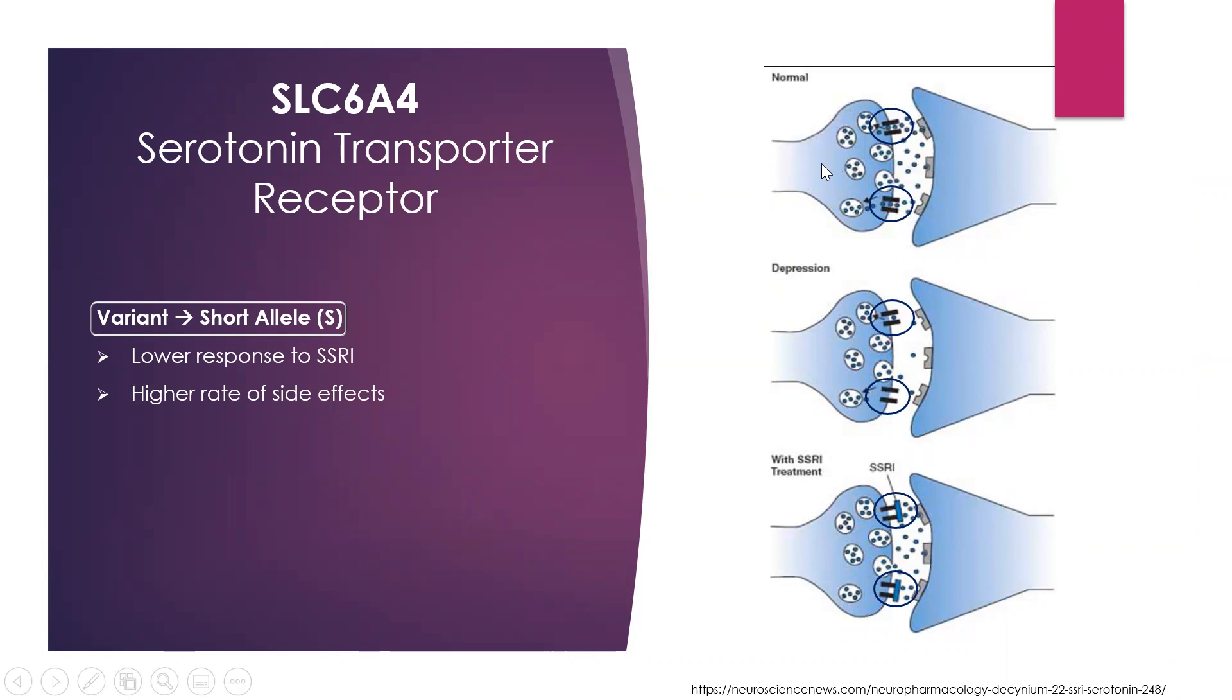When serotonin is made, it's stored in these vesicles and released through these SLC6A4 transporters out into the synaptic cleft. Then it attaches to its receptors on the postsynaptic cell where it creates an action.